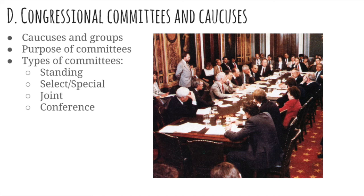Select or special committees are generally non-permanent, though they sometimes exist for a really long time. They have one special focus — for example, a special committee on intelligence or investigating a particular incident like Benghazi. There are also joint committees, which include members from both the House and the Senate. A subtype of that is the conference committee, which is used when the House and Senate pass two different but relatively similar versions of a bill, and they resolve those differences in the conference committee.